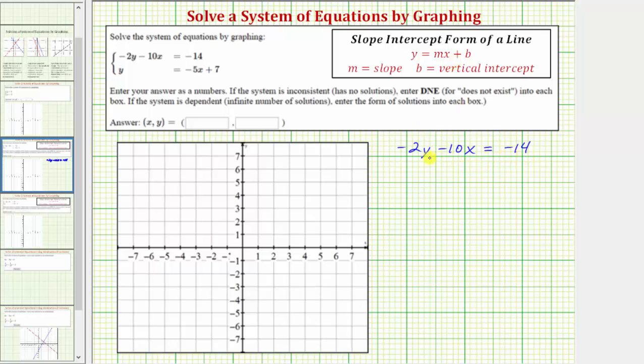To solve for y, let's first isolate the y term by adding 10x to both sides, which would give us negative 2y equals positive 10x minus 14. Now to solve for y, we'll divide both sides by negative 2, or divide each term by negative 2.